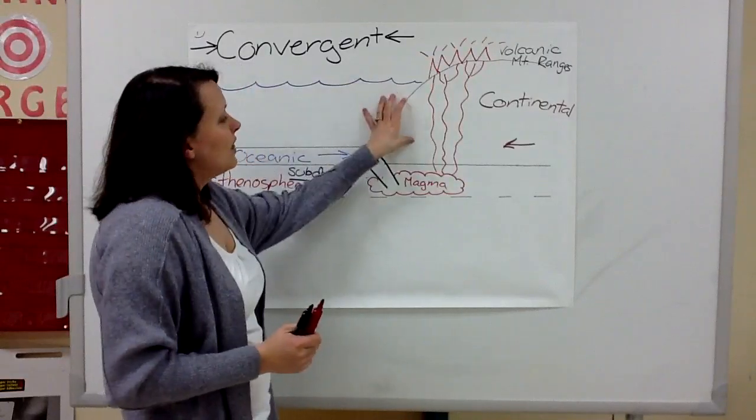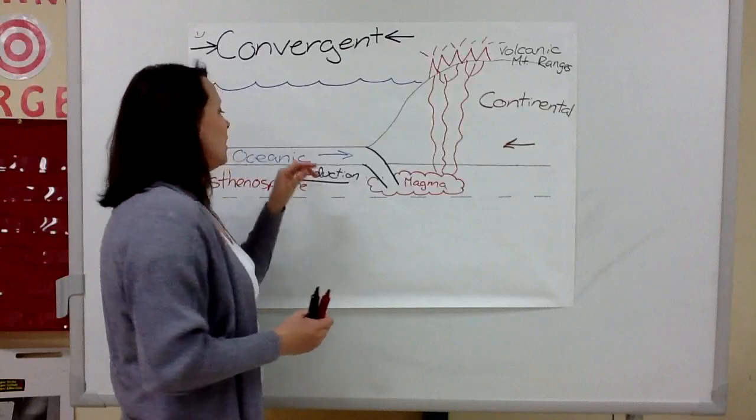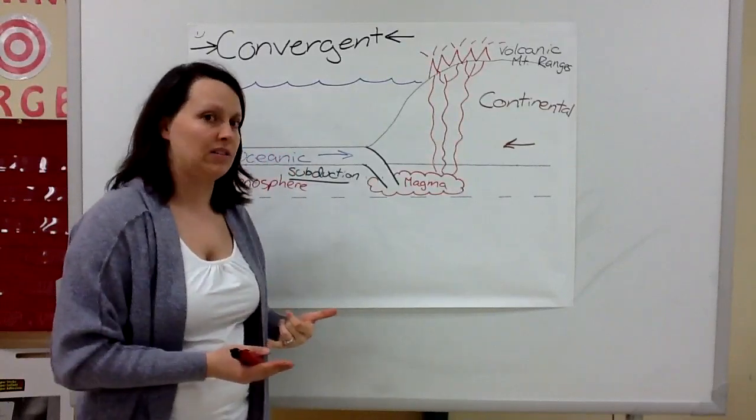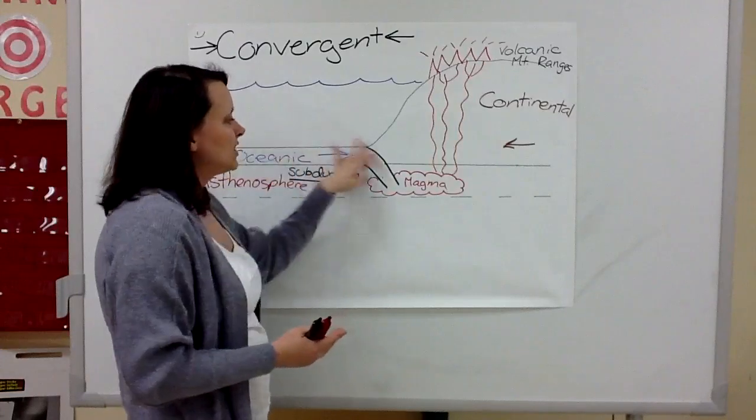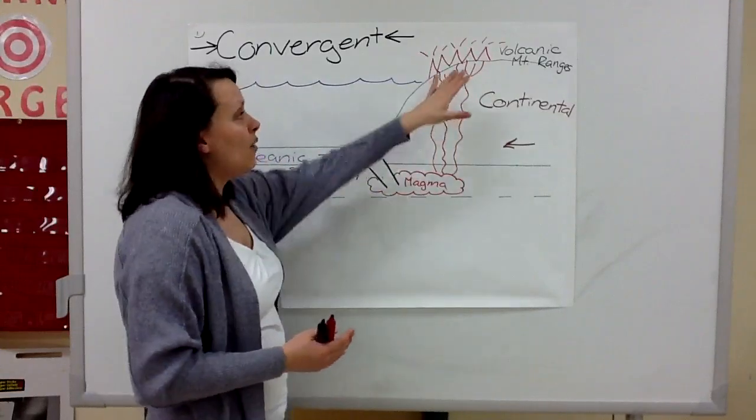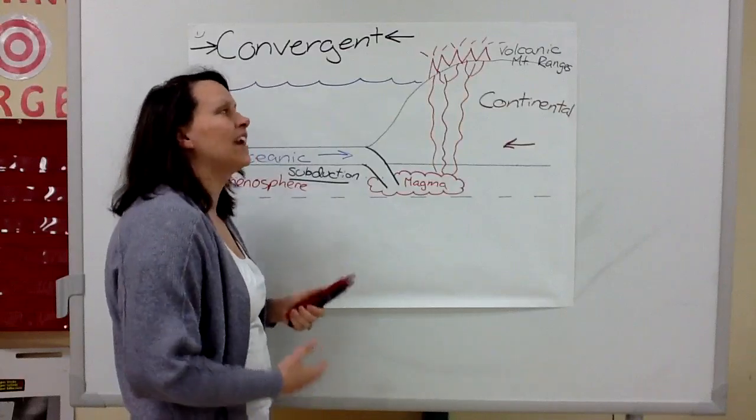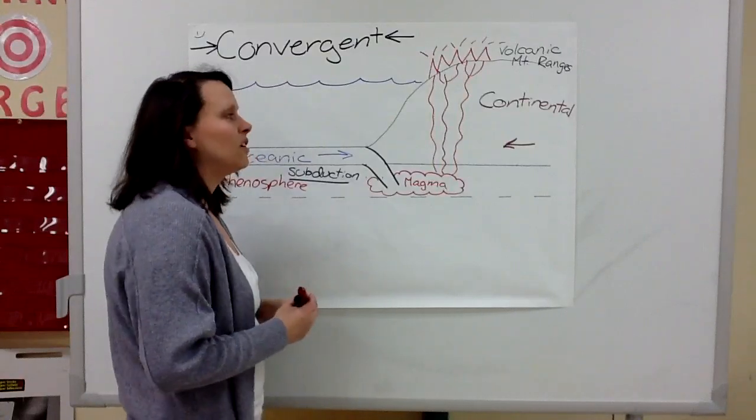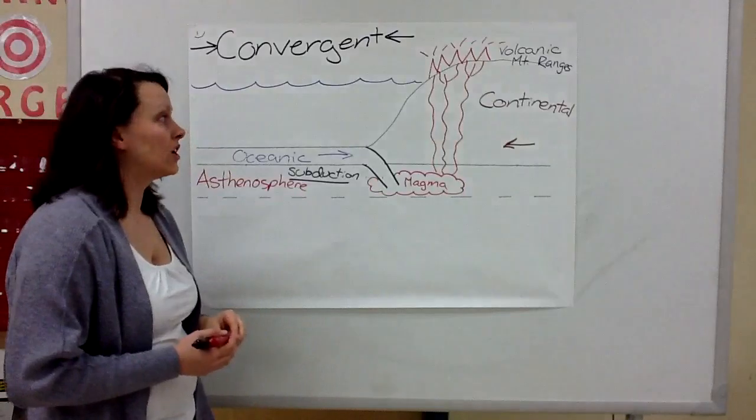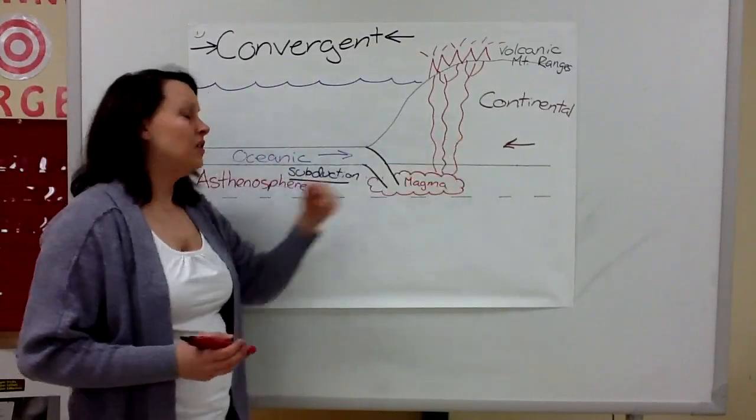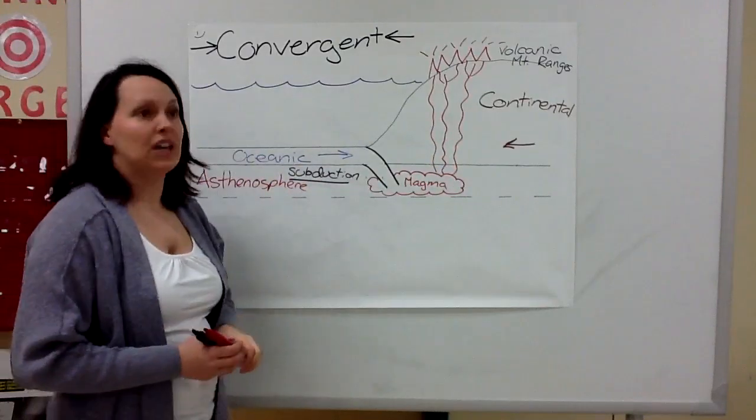Now this process happens also if oceanic crust hits oceanic crust, because one will sink underneath and they will make volcano mountain ranges. In this case, volcanic islands. We call it a volcanic island arc. This process happens when oceanic hits continental or oceanic hits oceanic.